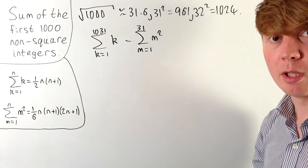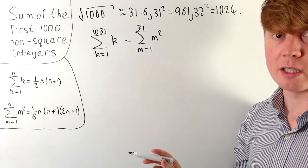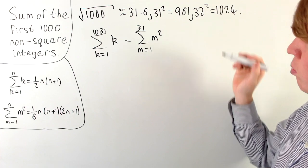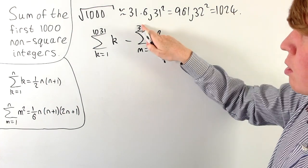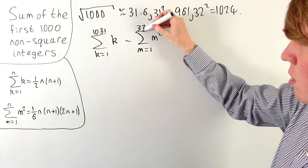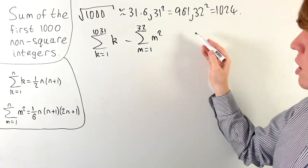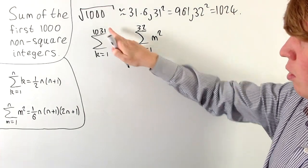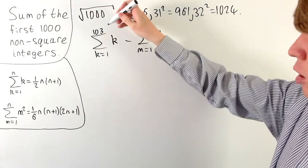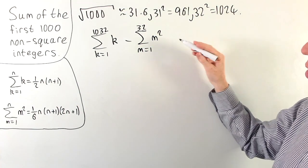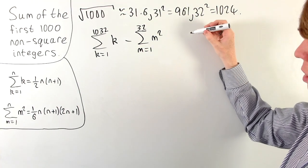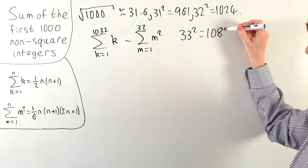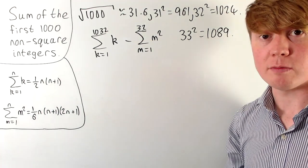But there's a problem: we've actually included 1,024 by going all the way up to 1,031, and we need to subtract 1,024. So we adjust by taking the sum of squares up to 32², removing that 1,024. Then to include the thousandth non-square integer, we just add in 1,032. We don't need to consider any others because 33² = 1,089, which is beyond the remit of this sum.